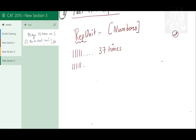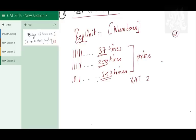And one one one one, let's say I have somewhere around 200 times. And let's say I have the third one, one one one one one one, let's say 243 times. Out of these three numbers, there's a 37-digit number, there's a 200-digit number, there's a 243-digit number precisely. Out of these three numbers, how many are primes?